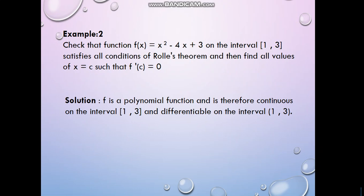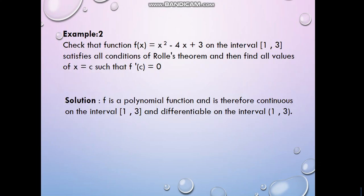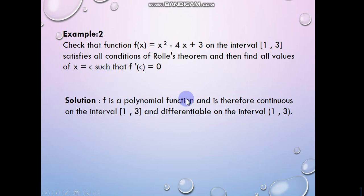Now solve one more example. Check that f(x) = x² − 4x + 3 on the interval one to three satisfies Rolle's theorem, and then find the value of c. This is a polynomial on [1, 3], so it is continuous on that interval.